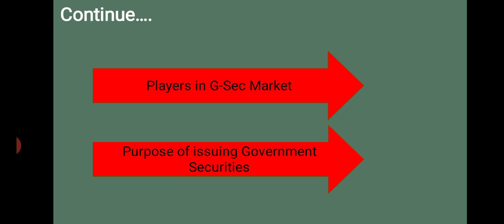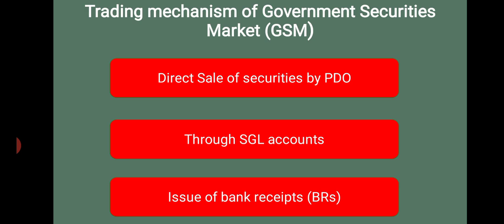The last important point in today's class is the trading mechanism of the government securities market. There are different methods by which trading transactions in the government securities market can be carried out. Let us discuss three important mechanisms. First, direct sale of securities by PDO — the Public Debt Office. Second, through SGL accounts — Securities General Ledger. Third, issue of Bank Receipt.